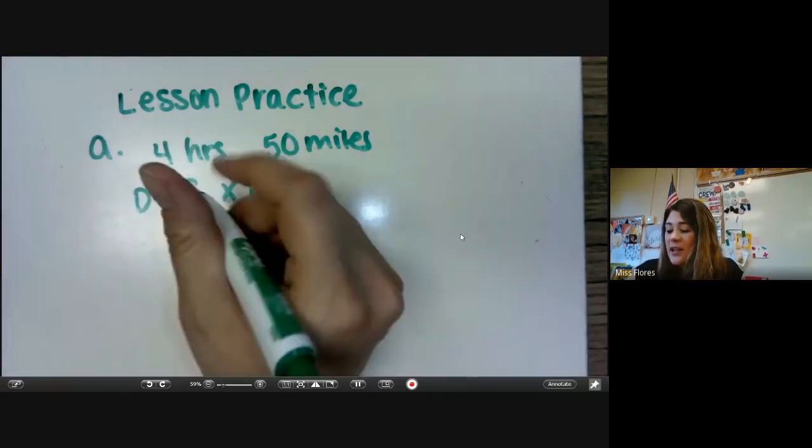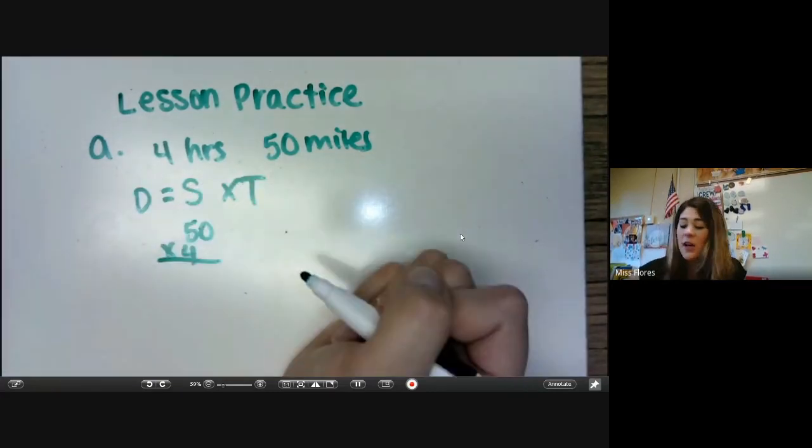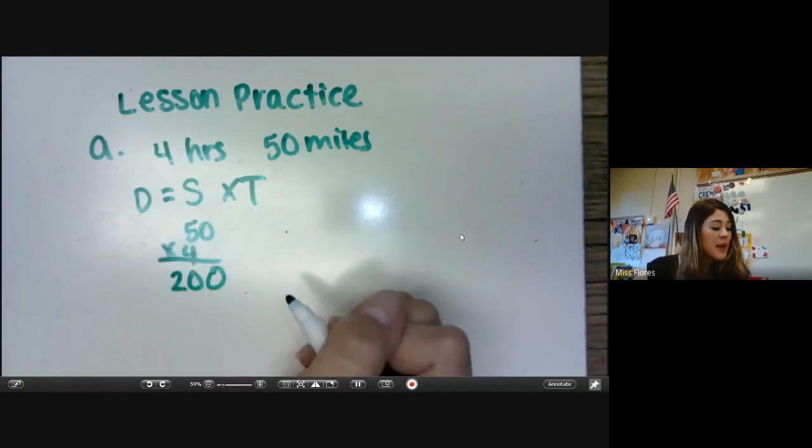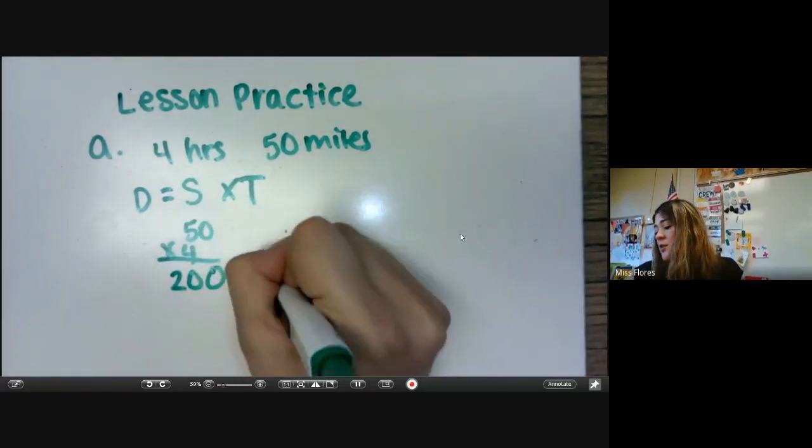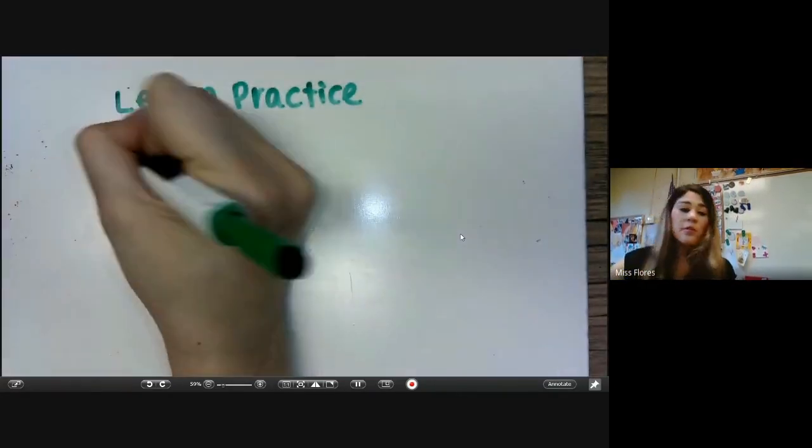So now we can work this out. 50 times four, we're going to hang out the zero. So five times four is 20. We added in a zero, so that means she went 200 miles total. Let's do B.